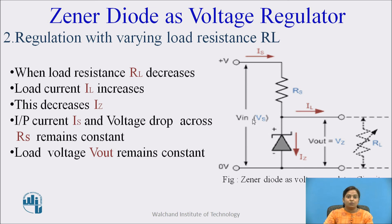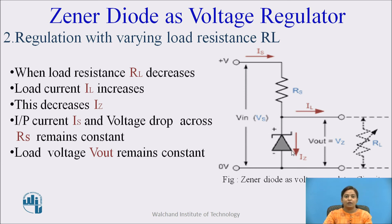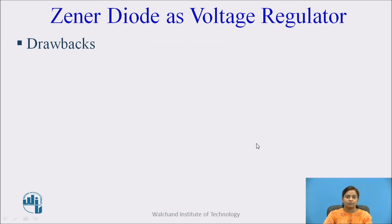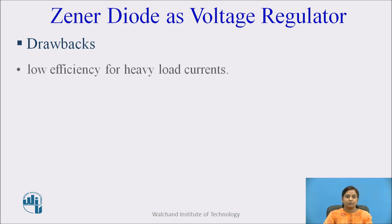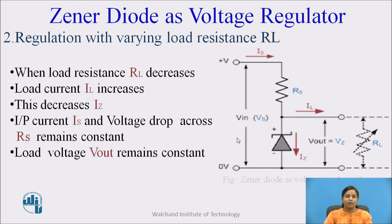In this way, at any condition, the output voltage or voltage across the load remains constant due to the Zener, which is connected in parallel with the load. In this way, the Zener diode acts as a voltage regulator.